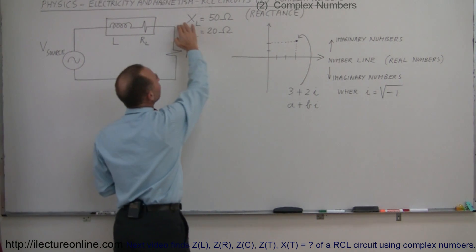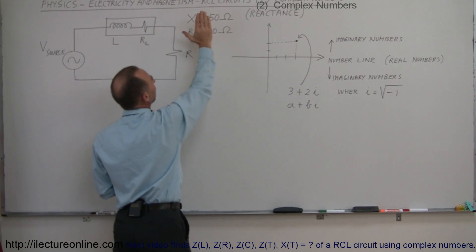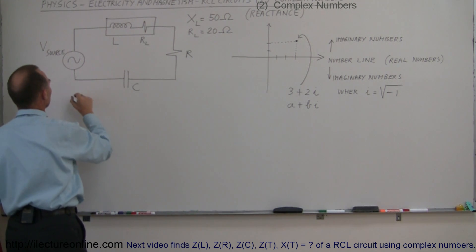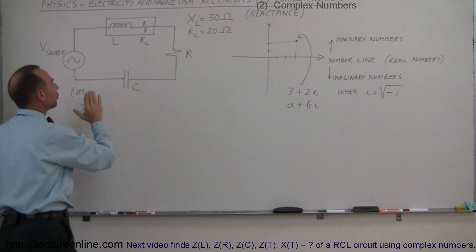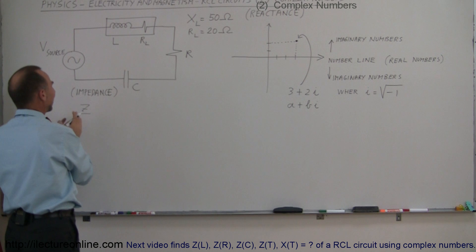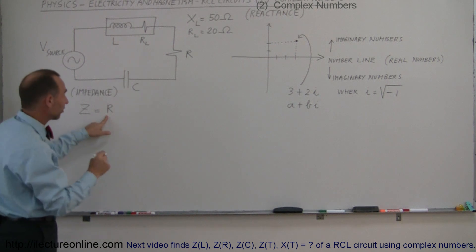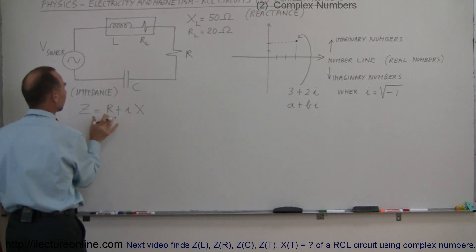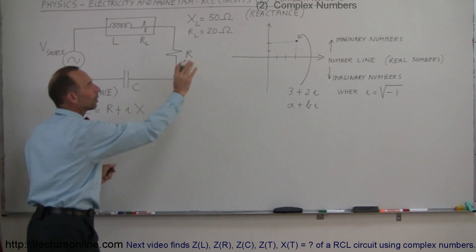Reactance is considered the imaginary part of the total opposition to the current. So we're going to write the total opposition to the current in terms of a complex number, and we're going to call it impedance. Z is the total opposition to current — it's a combination of the real and imaginary parts together. The impedance of a component is equal to the real part, which is the resistance, plus the imaginary part, which is the reactance. So Z equals R plus iX, where i is the square root of negative 1.